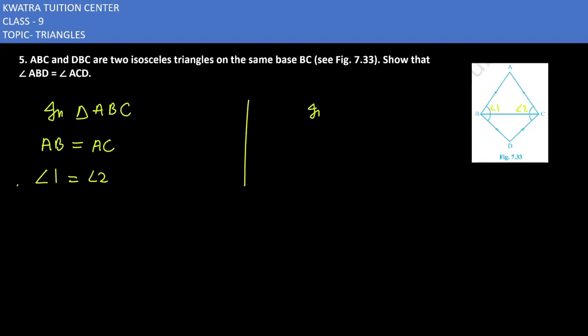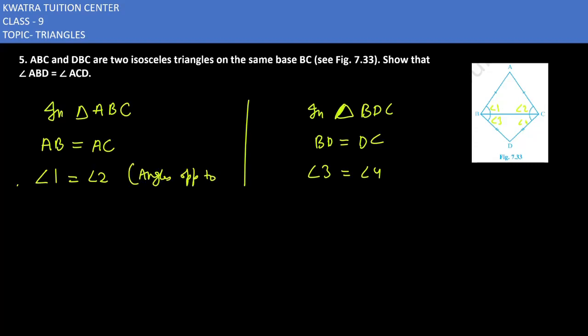Now in the other triangle BDC, BD is equal to DC. So angle three and angle four are equal in measure, because it is an isosceles triangle — angles opposite to equal sides are equal.